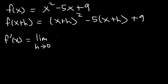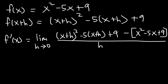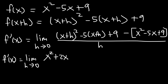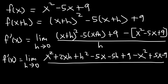Then f of x plus h is x plus h squared minus 5 times x plus h plus 9, and then minus f of x which is x squared minus 5x plus 9. Don't forget to distribute the negative sign, and this is all divided by h. So first we need to expand x plus h squared — we found earlier that x plus h times x plus h equals x squared plus 2xh plus h squared. Now we need to distribute the 5: negative 5x minus 5h plus 9. And then distributing the negative sign gives negative x squared plus 5x minus 9, all divided by h.